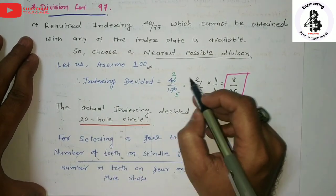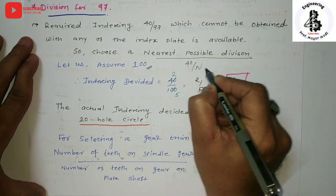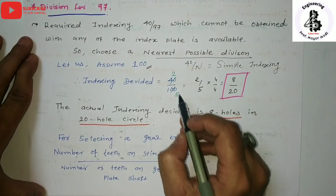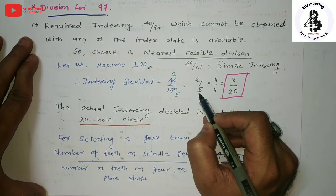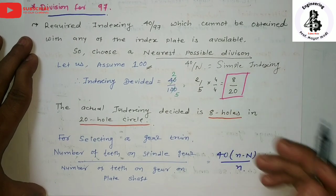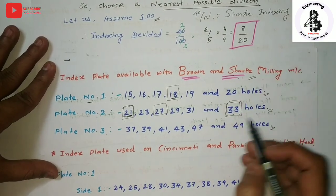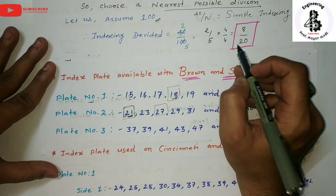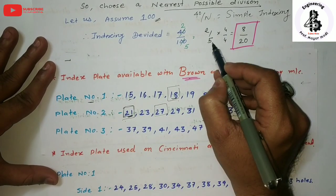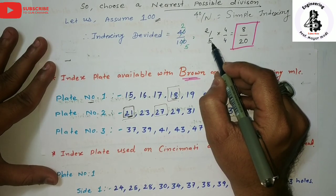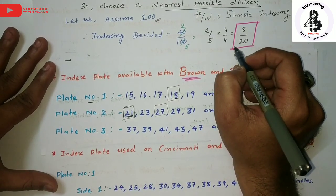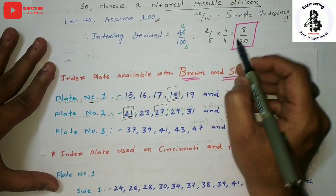Applying the simple indexing method with an assumed N of 100: 40 divided by 100 gives 2 by 5. You can express this as 2/5 by multiplying numerator and denominator equally. For selecting the index plate, the minimum value in the whole circle system is 15. Converting 2/5 to a whole circle system by multiplying by 3/3 or 4/4 gives suitable equivalents.